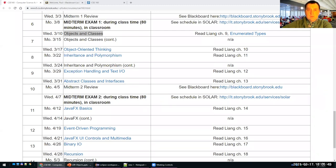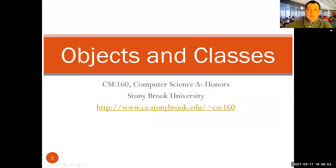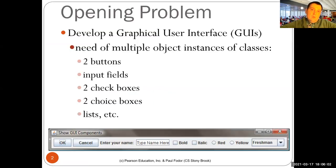So again, the type of programming that we'll start learning today is called object-oriented programming. And initially, it originated with graphical user interfaces. Smalltalk was the first object-oriented programming language, and basically it was a programming language in which one would develop a graphical user interface, also called GUIs.